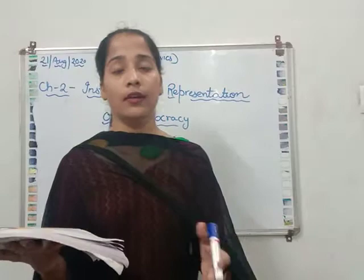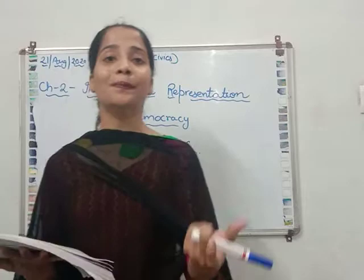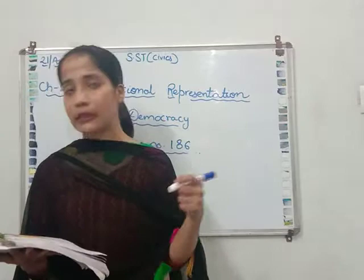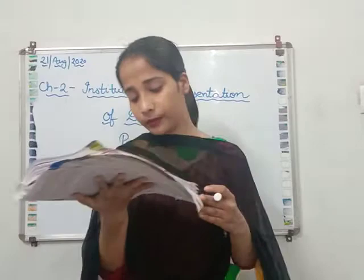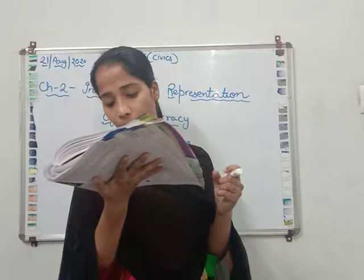In earlier times, people used to vote on ballot papers. But now EVM machines are there. So many changes have taken place. You can discuss those changes with your elders. Now we will start reading the chapter. We have learned about the values and ideals of democracy: liberty, equality, justice, diversity, and sovereignty.